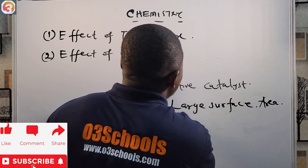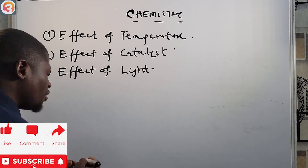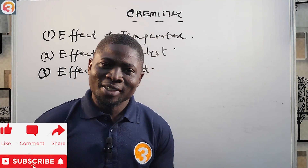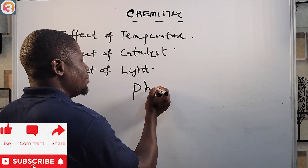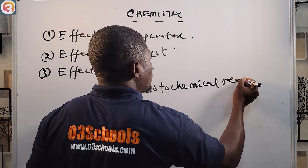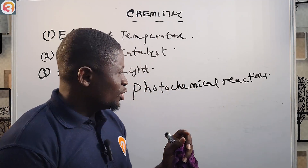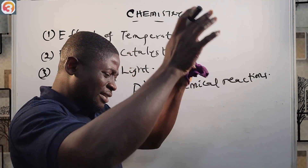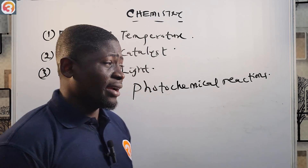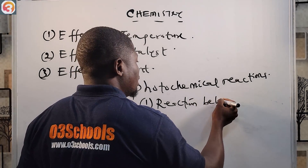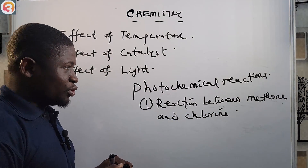The third factor is the effect of light. Light can influence the rate of chemical reactions. Reactions that can be influenced by light are called photochemical reactions. We have dealt with photochemical reactions in a previous episode on types of reactions. Examples of photochemical reactions include the reaction between methane and chlorine.